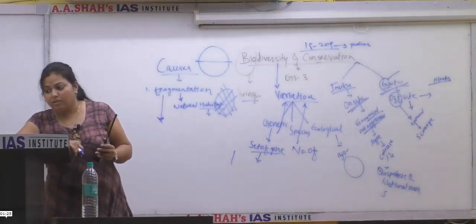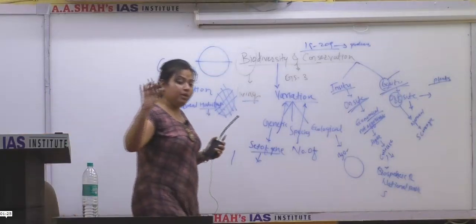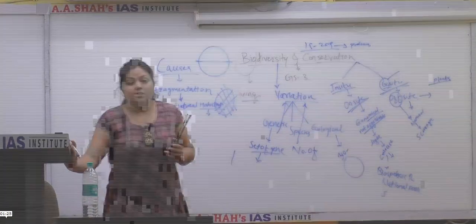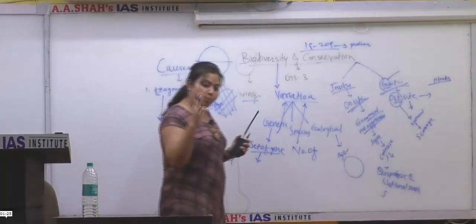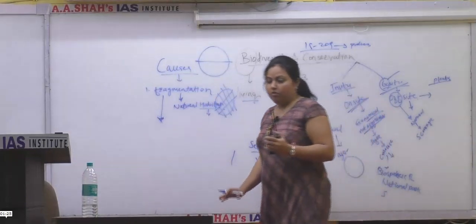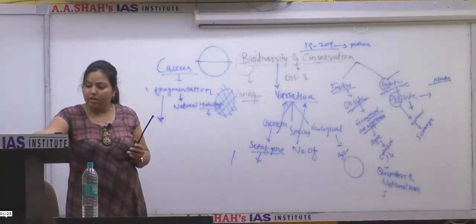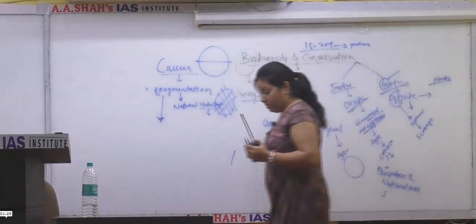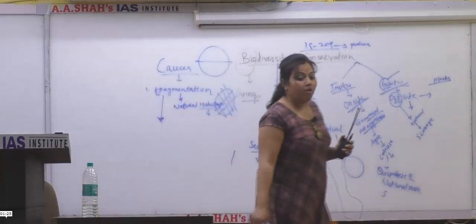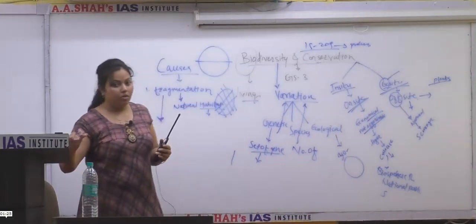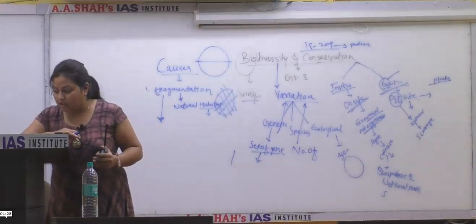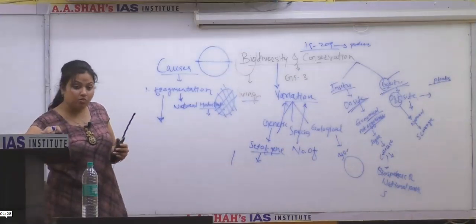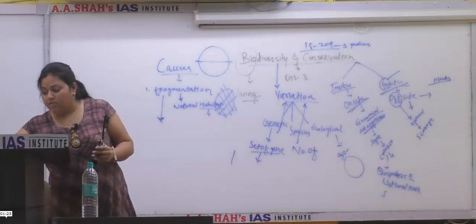In ex situ, special measures are taken, focusing on a particular animal or tree that is going extinct, near-threatened, threatened, or endangered. The first Biological Diversity Convention was held at the Earth Summit in 1992 in Rio de Janeiro — a question also asked by UPSC prelims. After that, in 2002, the World Summit on Sustainable Development took place in Johannesburg, South Africa.